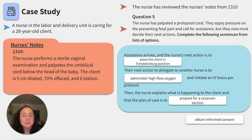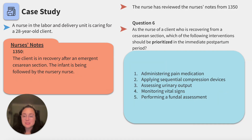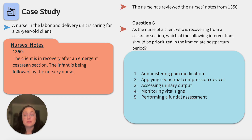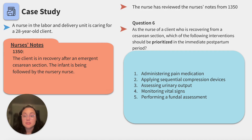At 1350, the client is in recovery after an emergent cesarean section, and the infant is being followed by the nursery nurse. We made it — we recognized the condition and acted quickly, but our job isn't done yet. As a nurse for a client recovering from a cesarean section, which of the following interventions would be prioritized in the immediate postpartum period? Administering pain medication, applying sequential compression devices, assessing urinary output, monitoring vital signs, or performing a fundal assessment?